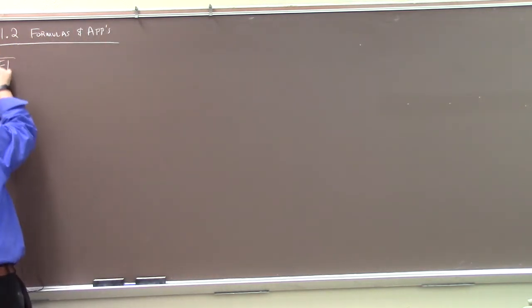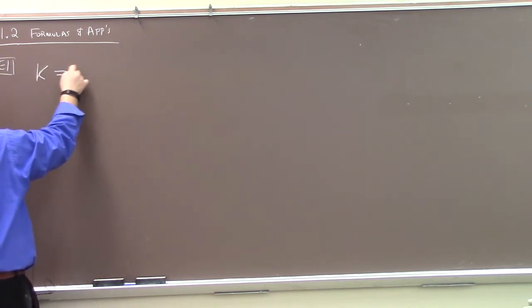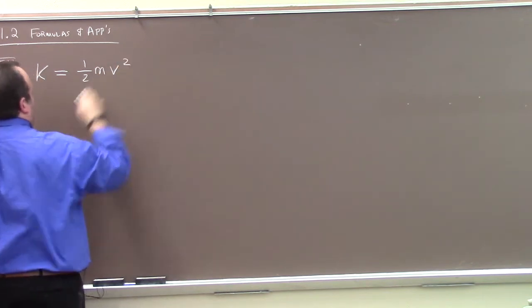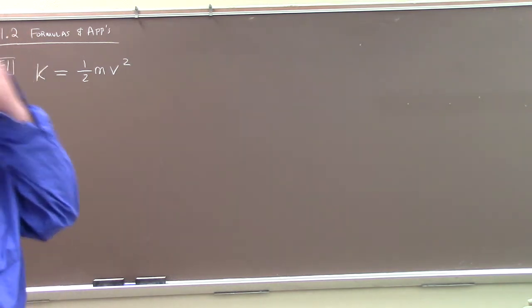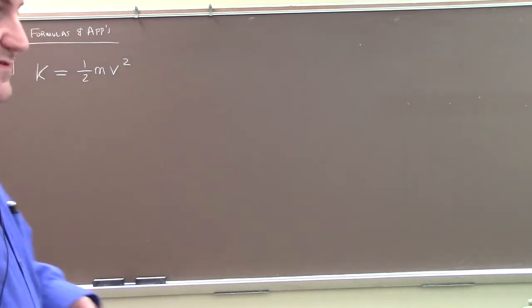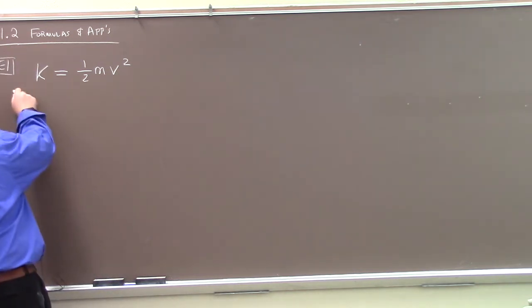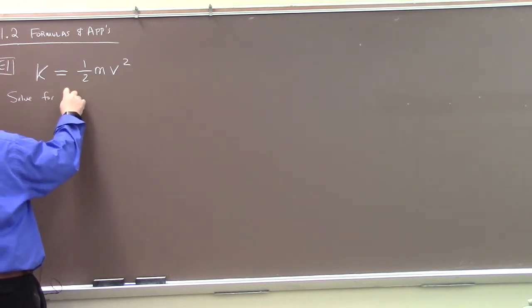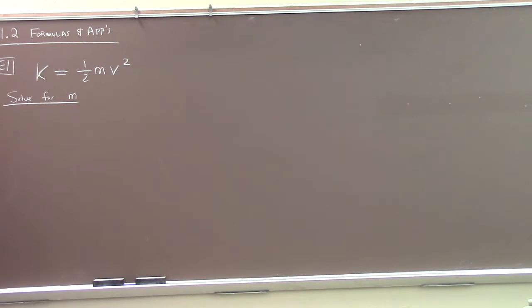Here's an example from physics: K equals one-half mv squared. This is the kinetic energy formula — kinetic energy is one-half the mass times the velocity squared. A problem we could ask is to solve for m. So how would we solve for m?